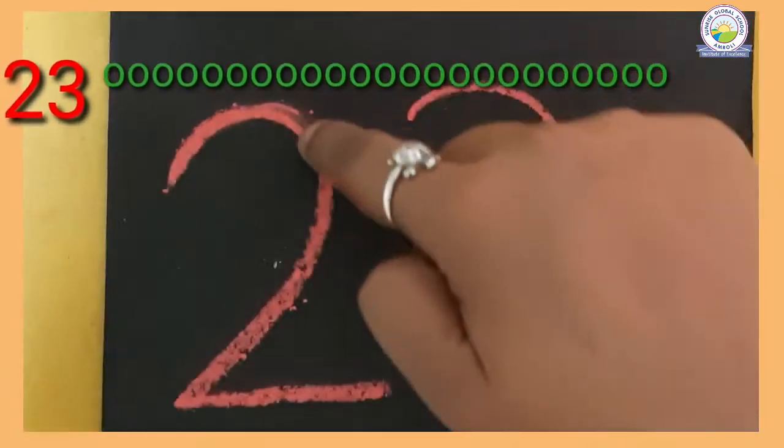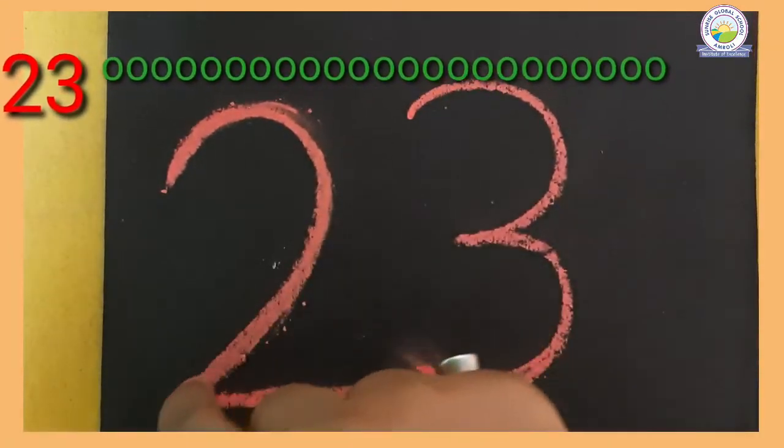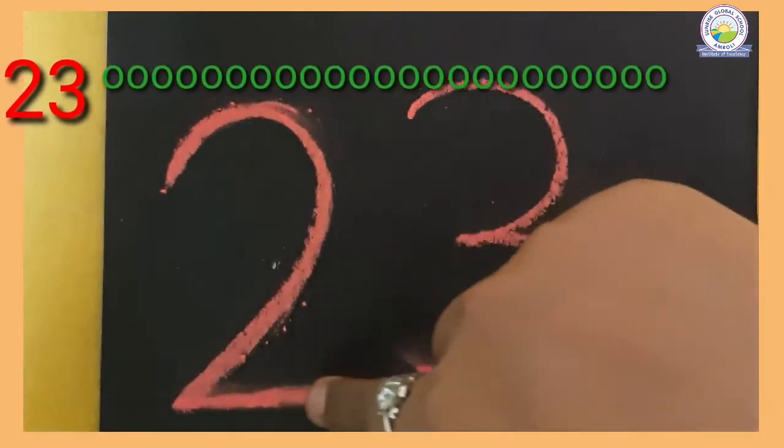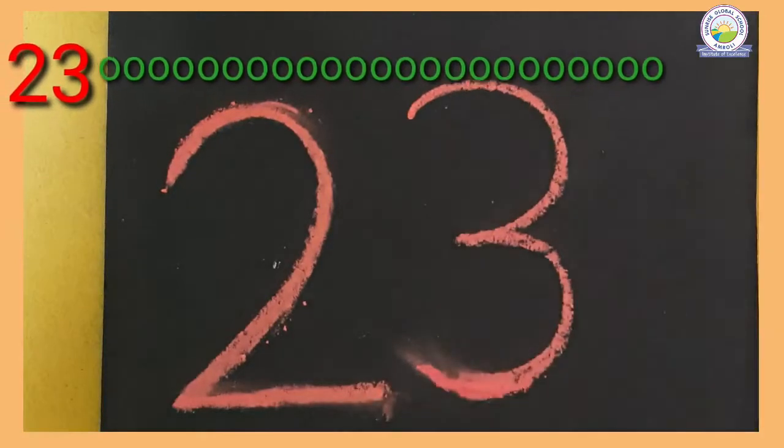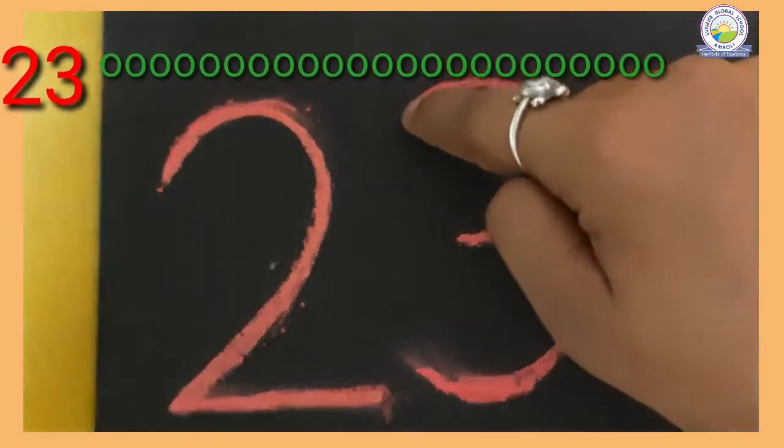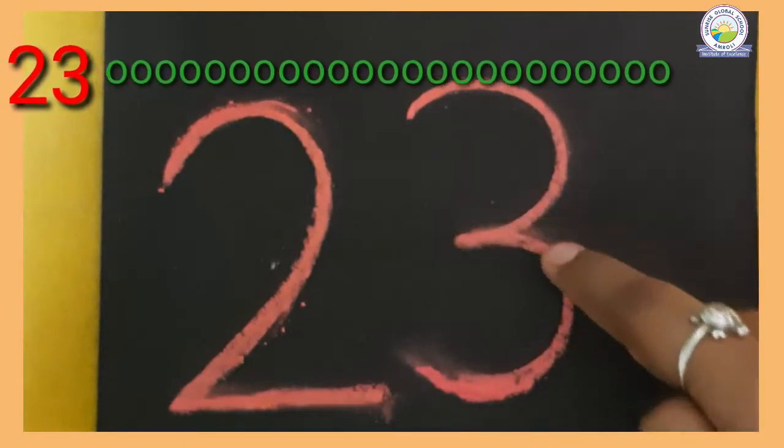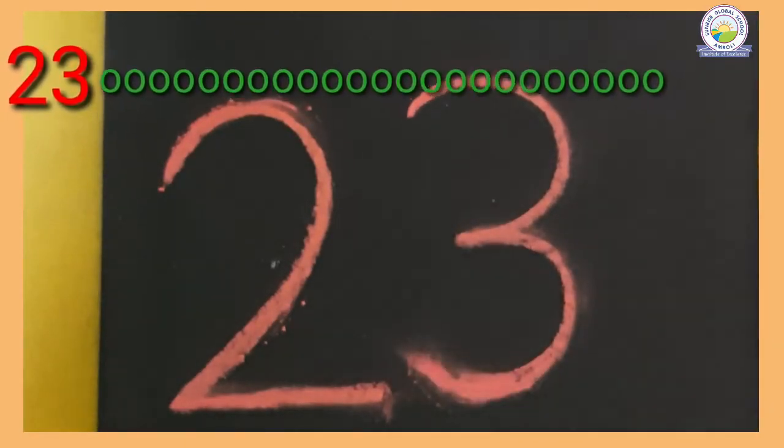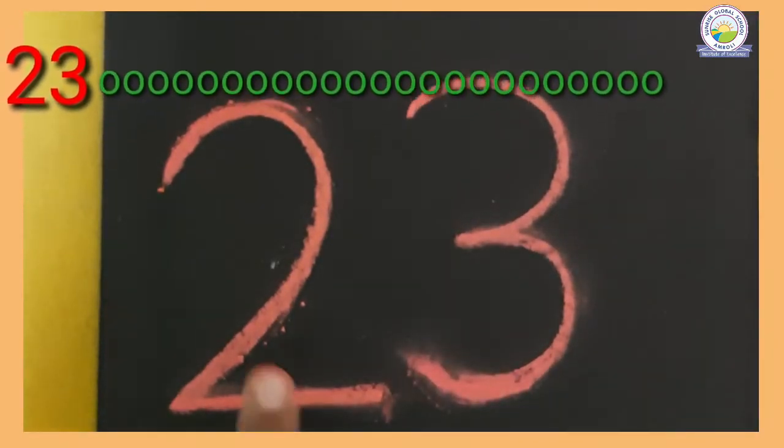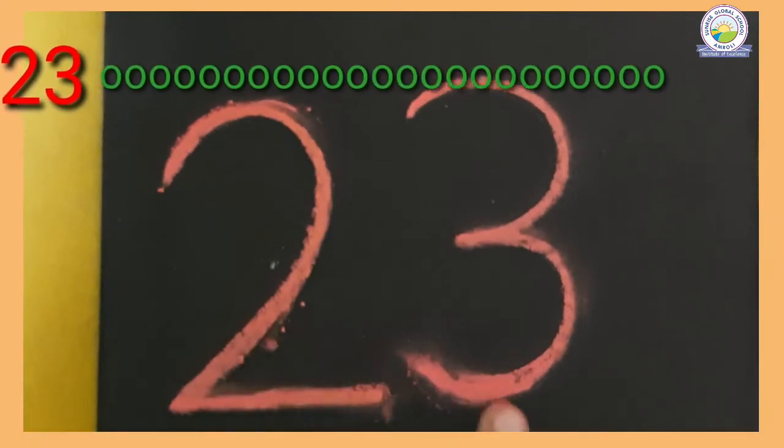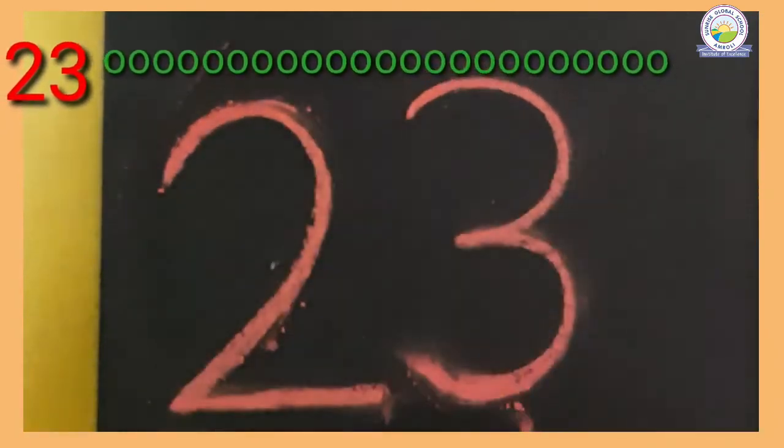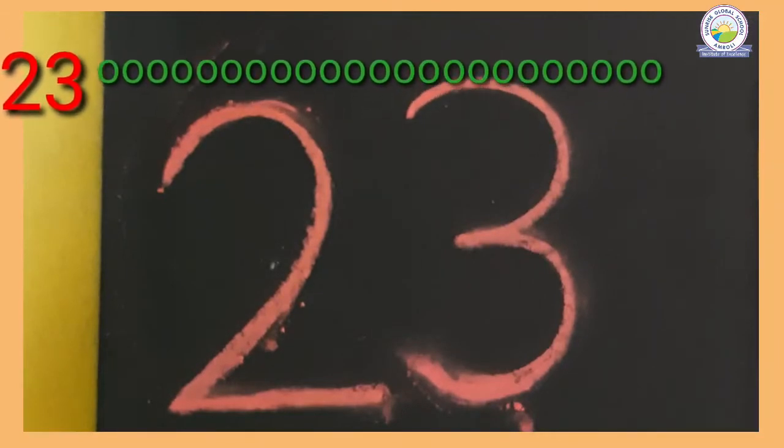Half circle, slanting line, then sleeping line - number 2. And then one half circle, then downside, one more half circle. This is 3. 2 and 3 together, number 23.